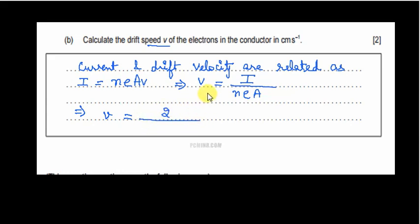The number density of electrons is given to be 8.5 into 10 to the power 22 per centimeter cube times e, the charge on an electron is 1.6 into 10 to the power minus 19 coulombs.